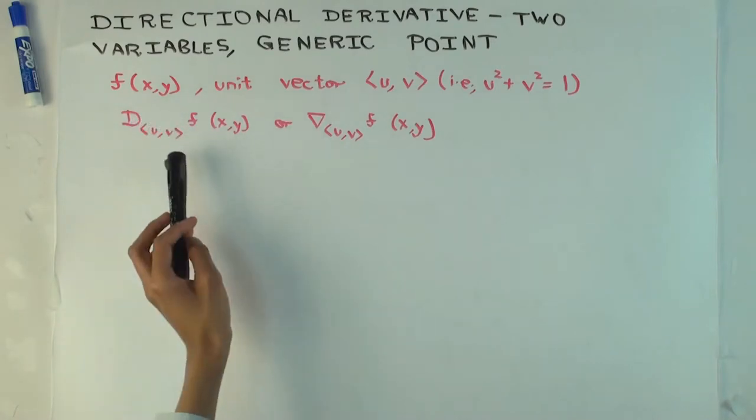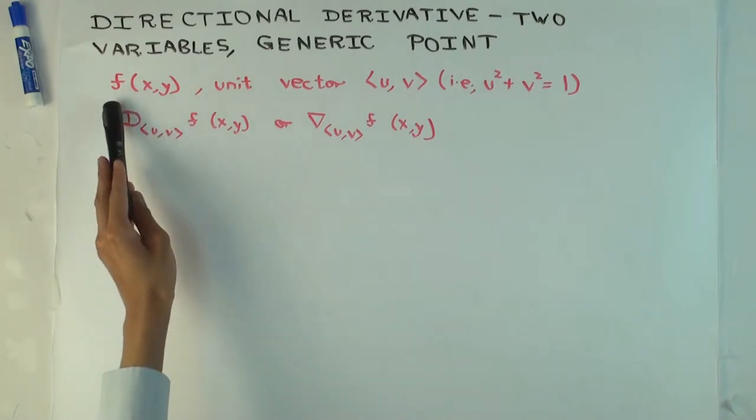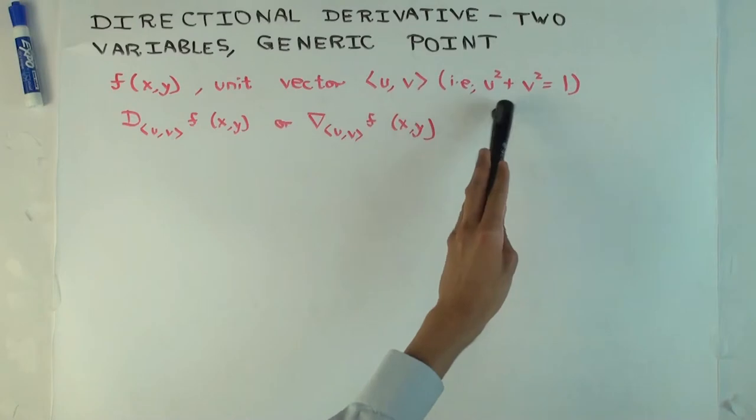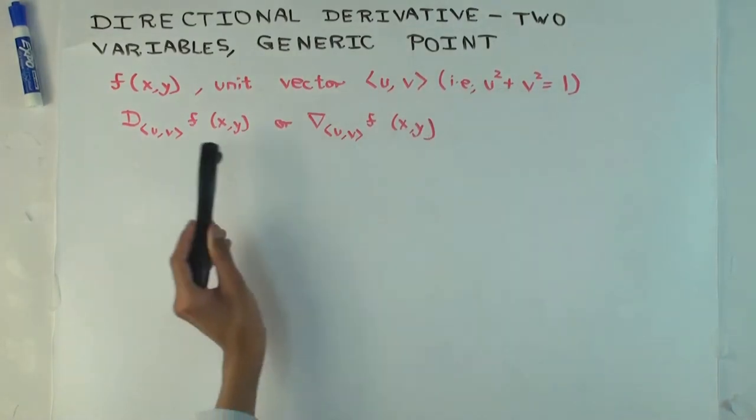What that means in effect is, let me go to the preliminaries. f is a function of two variables, there's a fixed unit vector. This is an actual pair of numbers that are given here, which is a unit vector satisfying this condition.